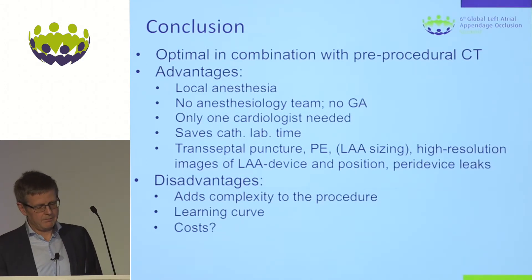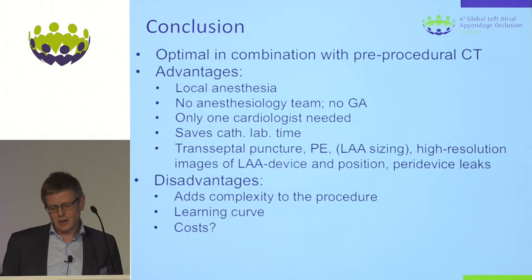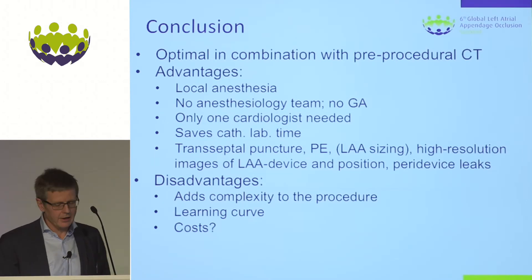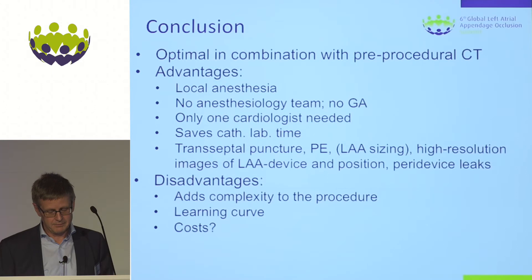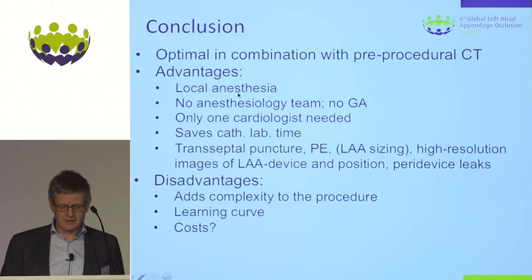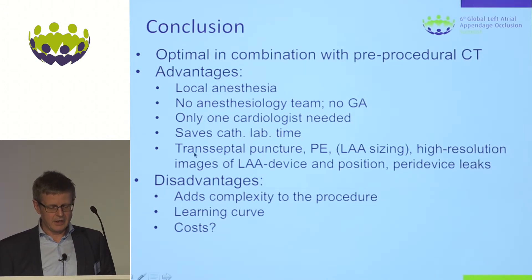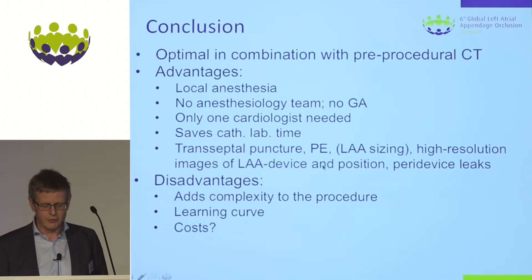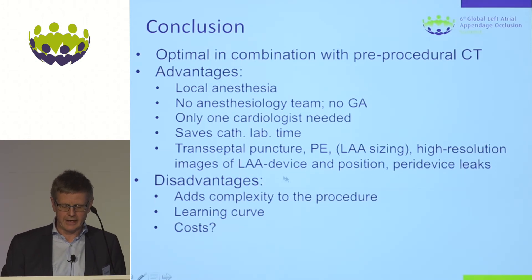In my view, ICE is definitely an alternative to TOE, and I find it optimal in combination with pre-procedural CT — I don't like excessive sweeping with the ICE probe in the left atrium, and CT is the superior modality for sizing. The advantages of this technique include: performing the procedure under local anesthesia with an awake patient who can report discomfort; no need for an anesthesiology team; only one cardiologist required; saved cathlab time; safe transseptal puncture under ICE; ability to screen for pericardial effusion; supplementary sizing capability; excellent near-field images of the landing zone, orifice, and disc; and assessment of peridevice leaks by color flow.